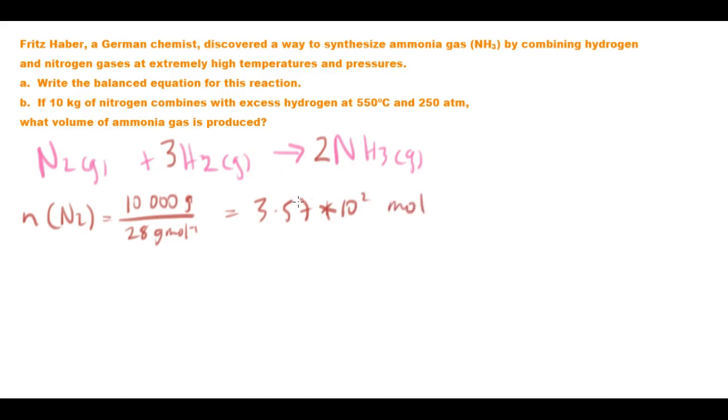Now you can do this second part a couple of different ways. You could figure out the volume of nitrogen and then work out the volume ratio, but we could just figure out the number of moles of ammonia. Let's figure out the number of moles of ammonia compared to the number of moles of nitrogen. It's 2 to 1, so it's 2 times the number of moles of nitrogen, which ends up being about 7.14 by 10 squared mole.